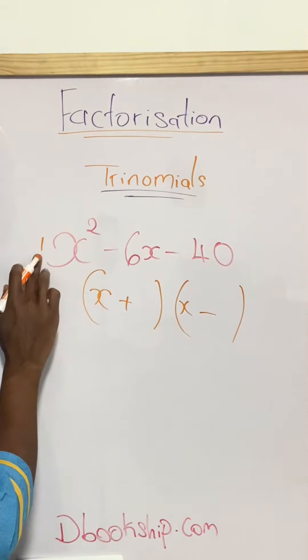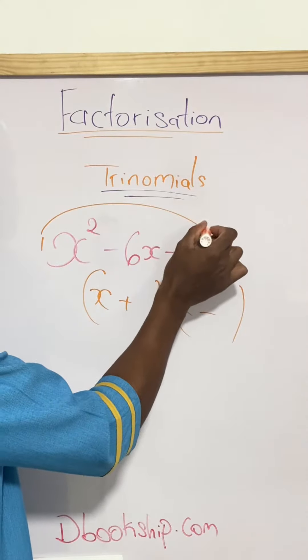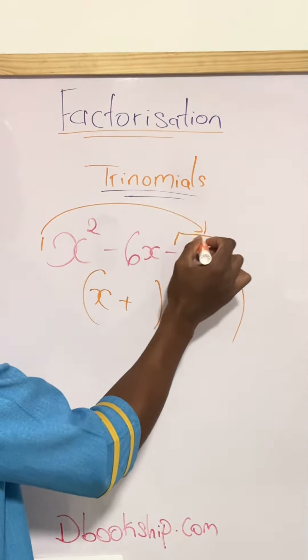The next step is that we're going to take our coefficient here as 1 and we have a times c, which is 1 times negative 40.